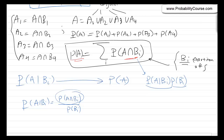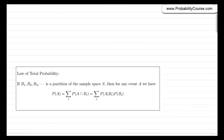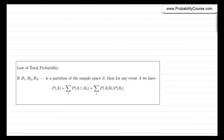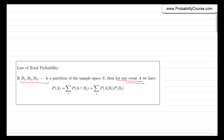So let me summarize this. If I have sets B1, B2, B3, and so on, and they are a partition of the sample space S, then for any event A, the probability of A can be written as the summation of probability of A and Bi, which equals the summation of probability of A given Bi times probability of Bi.